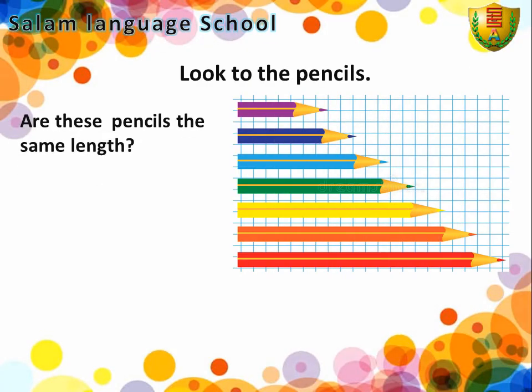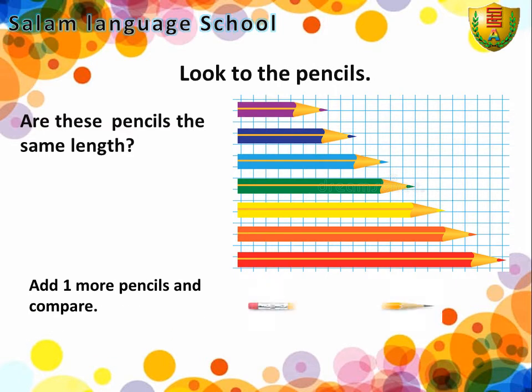Look at the pencils. Are these pencils the same length? No, they are different. If you add one more pencil and compare, what do you notice? When we compare the lengths of objects, we arrange them from the shortest to the longest.